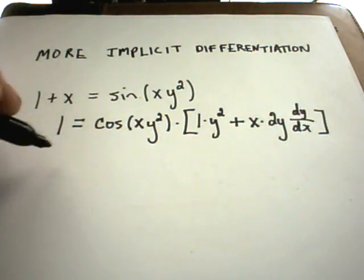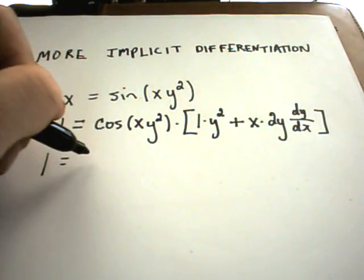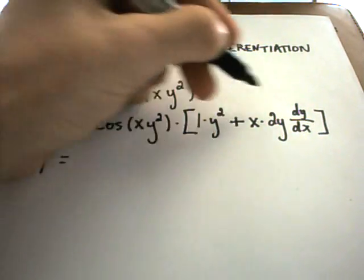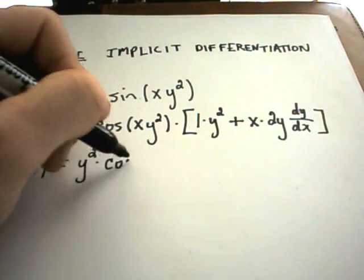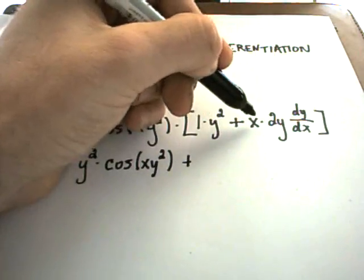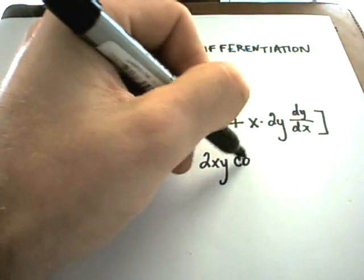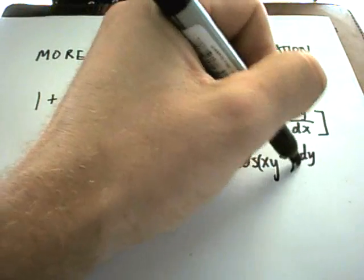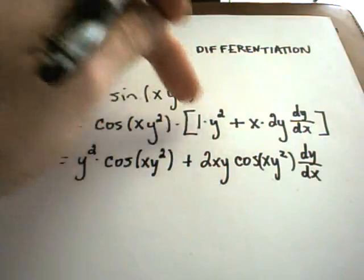Okay, so at this point, the idea is you just want to solve for dy/dx. So, you need to get rid of any parentheses or brackets that you have. I'm going to distribute this whole cosine xy squared term to each part inside the brackets. I'll pull the y squared out front and then have cosine of xy squared.